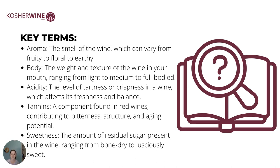And then acidity — that's the level of tartness or crispness in a wine. A lot of our favorite dry white wines like Sauvignon Blanc or Riesling are really highly acidic. You can tell this by how much it's making you salivate. This can affect the freshness, balance, and sometimes even the perceived sweetness on your palate. Of course, tannins — a component found in red wines that contributes to bitterness or that drying feeling in your mouth, but also allows a wine to age well. And then sweetness — the amount of residual sugar left in the wine after fermentation, ranging from bone dry to really, really sweet.